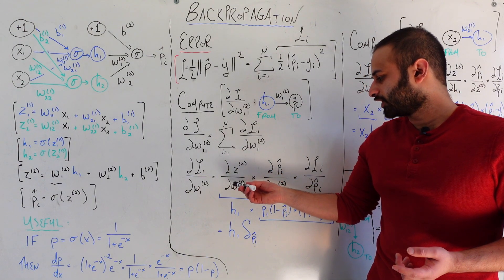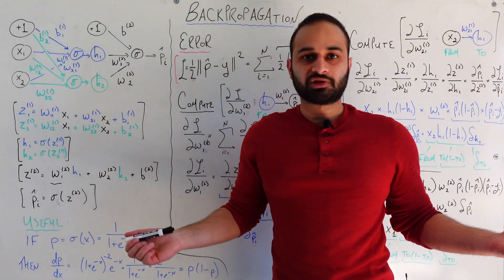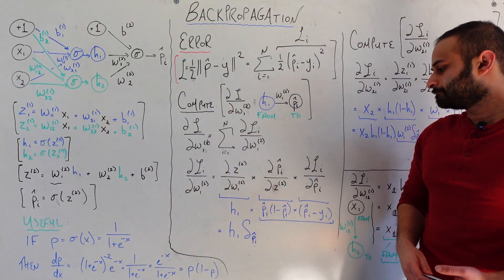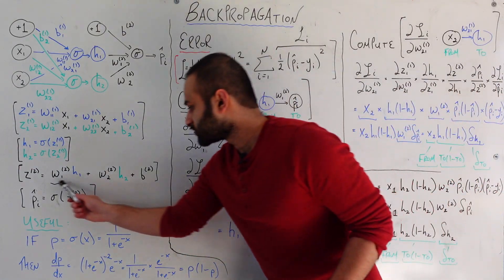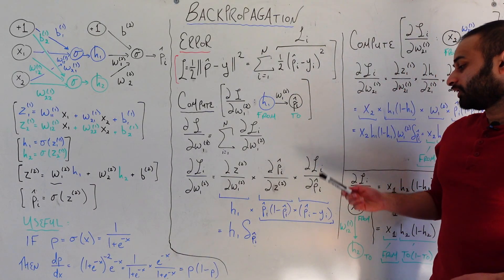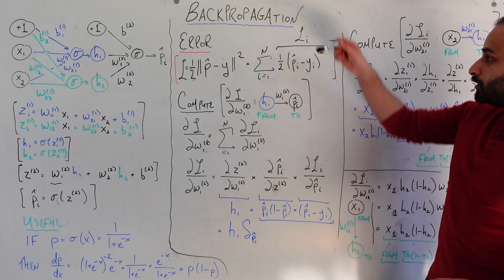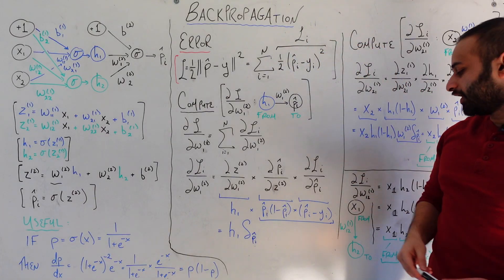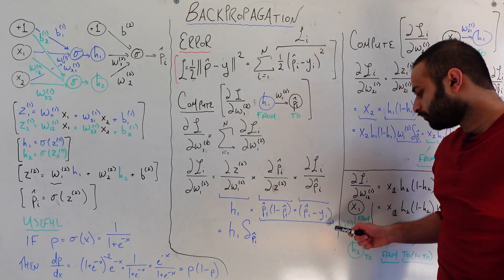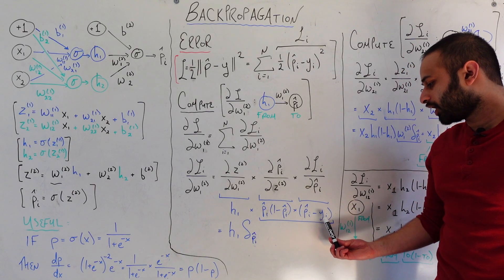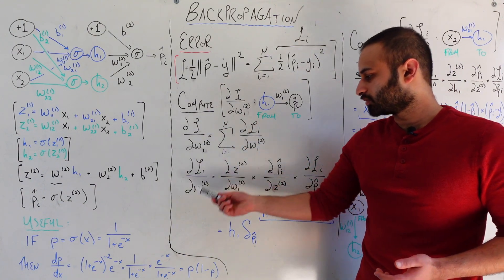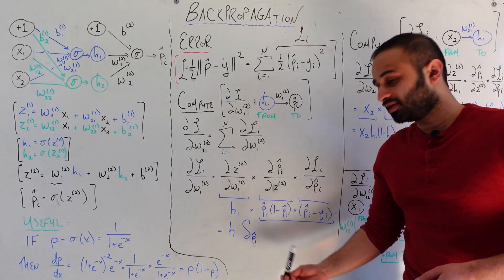Expressed mathematically: w12 changes z2, z2 changes pi-hat, and pi-hat changes L sub i. What is the derivative of z2 with respect to w12? This is just a linear equation, so it's simply h1. Next, the derivative of pi-hat with respect to z2 is simply pi-hat times one minus pi-hat, from our sigmoid derivative formula. Finally, the derivative of L sub i with respect to pi-hat is just pi-hat minus y-i. As a shorthand, let's collect pi-hat times one minus pi-hat times pi-hat minus y-i into a single term called delta pi-hat. So the derivative of L sub i with respect to w12 is simply h1 times delta pi-hat.